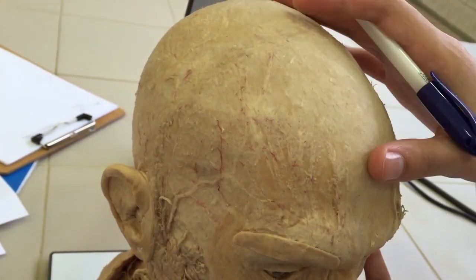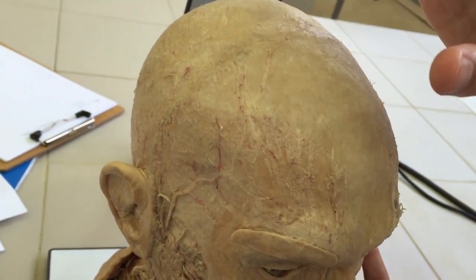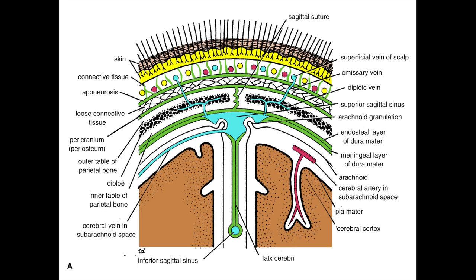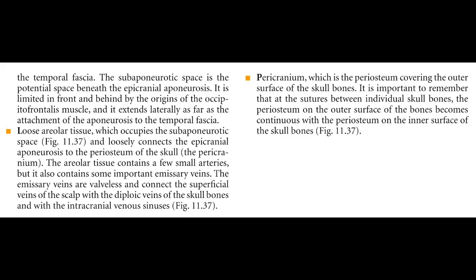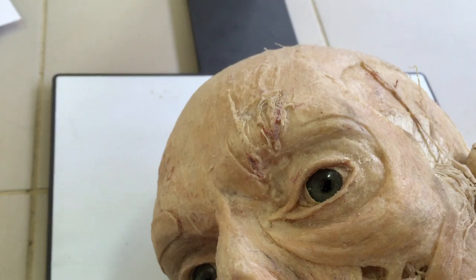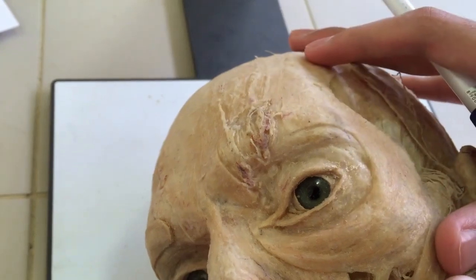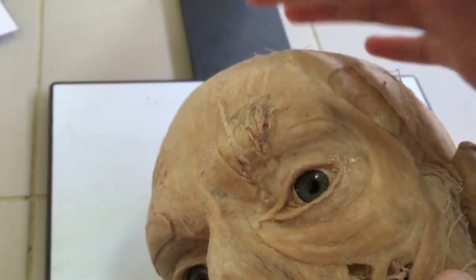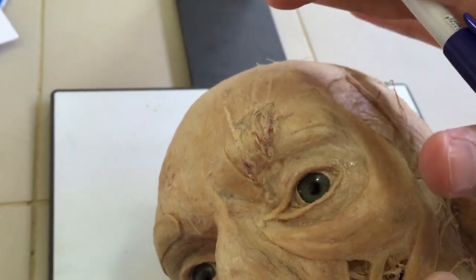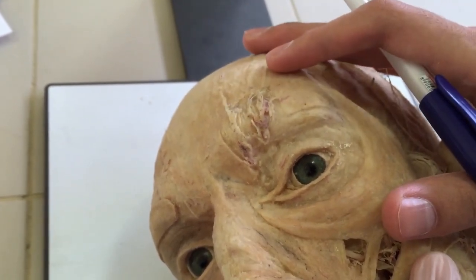And the deepest layer of the scalp is P, standing for pericranium, which surrounds bones of the cranium. Now we'll talk about nervous supply and blood supply of the scalp. On each side, we've got six nerves and six vessels supplying the scalp. We'll now talk about the nervous and blood supply of the scalp on the left side.